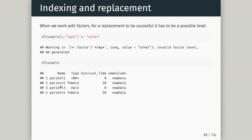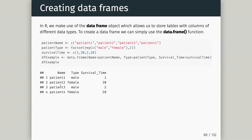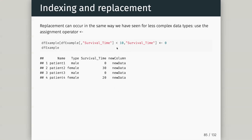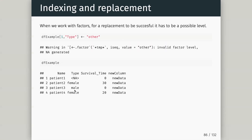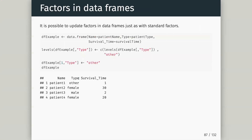We have the same issue with factors within data frames. Our second column was a factor when we created it. This means when I try to replace any value in that column with something not originally in the levels, it will give an invalid factor level warning. 'Other' wasn't in the original list of female or male, so it puts an NA — just like working on an individual factor.